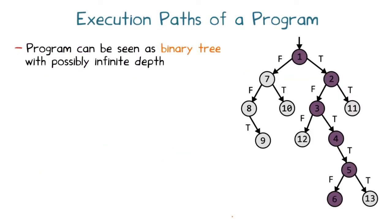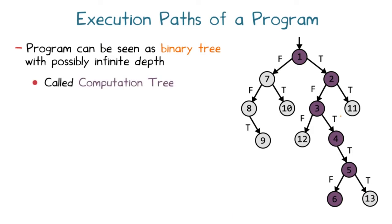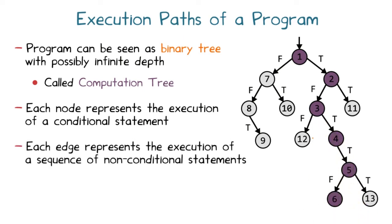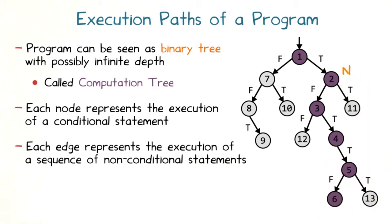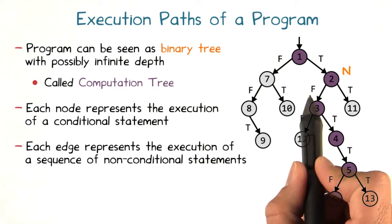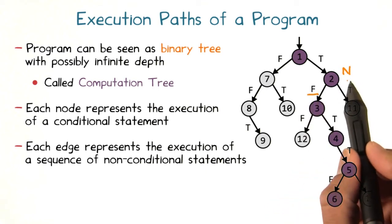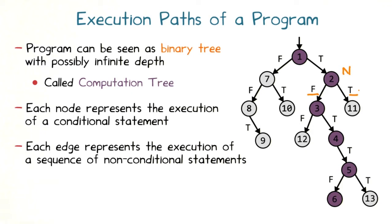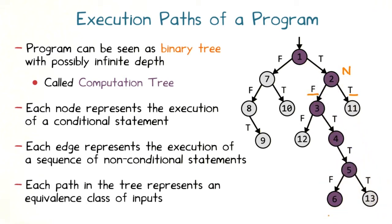To understand how dynamic symbolic execution works, let's visualize a program as a binary tree with possibly infinite depth called the computation tree. Each node represents the execution of a conditional statement, and each edge represents the execution of a sequence of non-conditional statements. We have unrolled all loops in the program by representing each loop as a sequence of consecutive if-then-else statements, meaning the tree might have infinite depth.